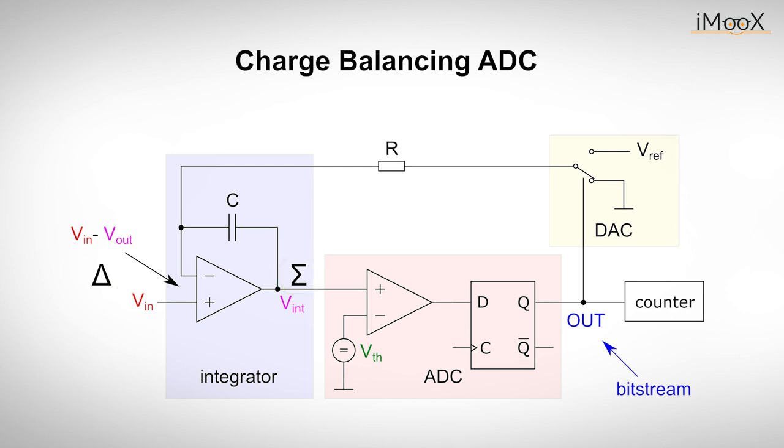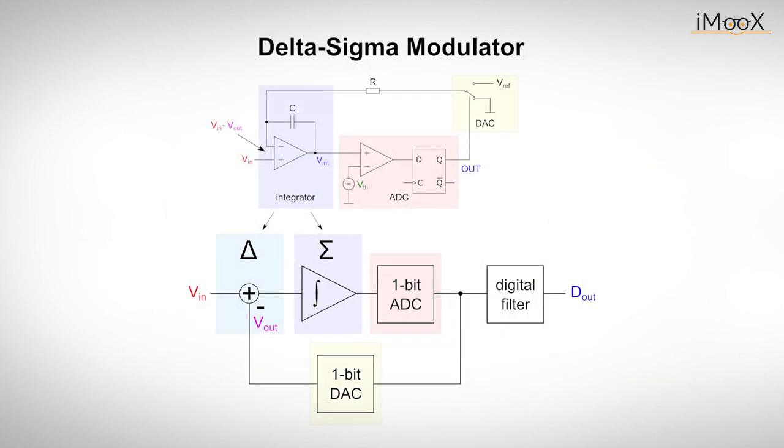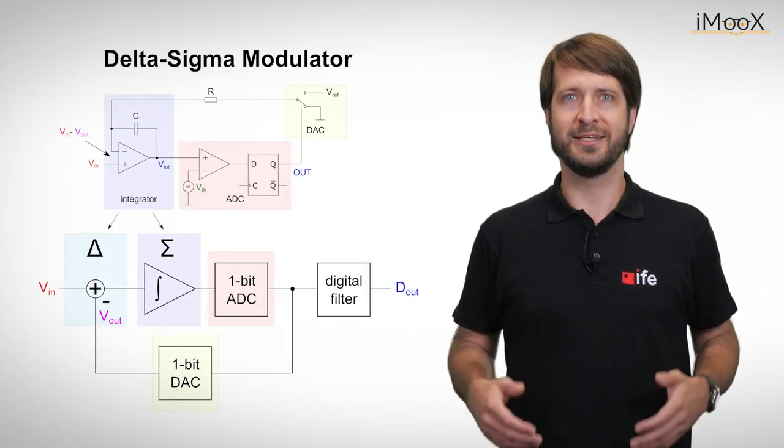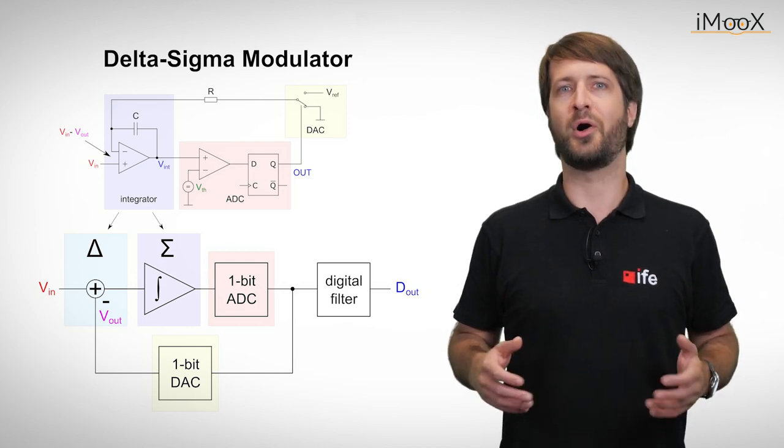In practice, Vref is often replaced by either a precision current source or a digital-to-analog converter that switches between two voltages, for example 1 and minus 1 volts. To better understand this circuit, we can also simplify it by eliminating the output counter and splitting the differential amplifier and integrator. In this representation, we get a first-order delta-sigma modulator.